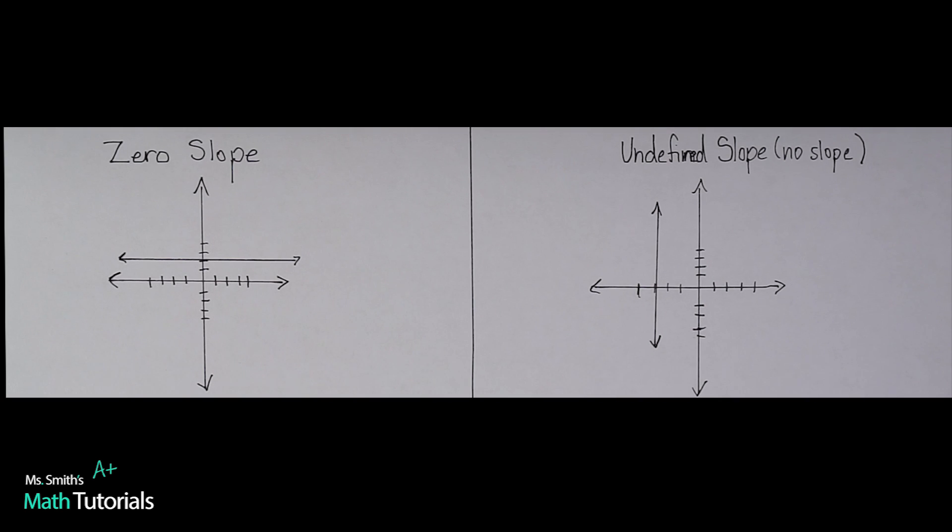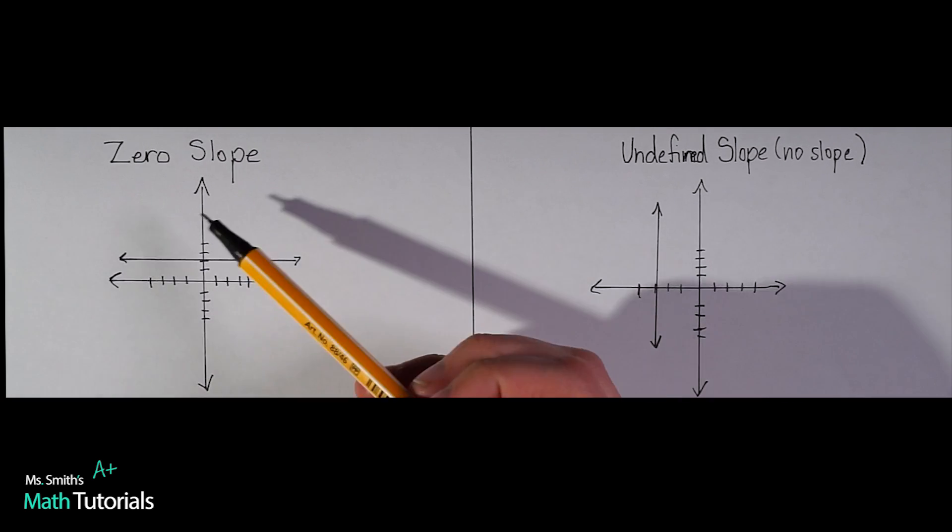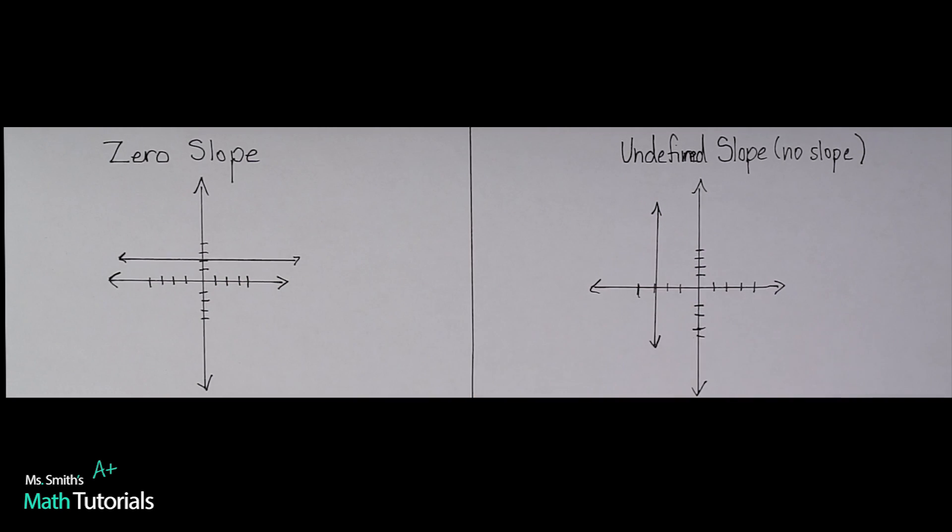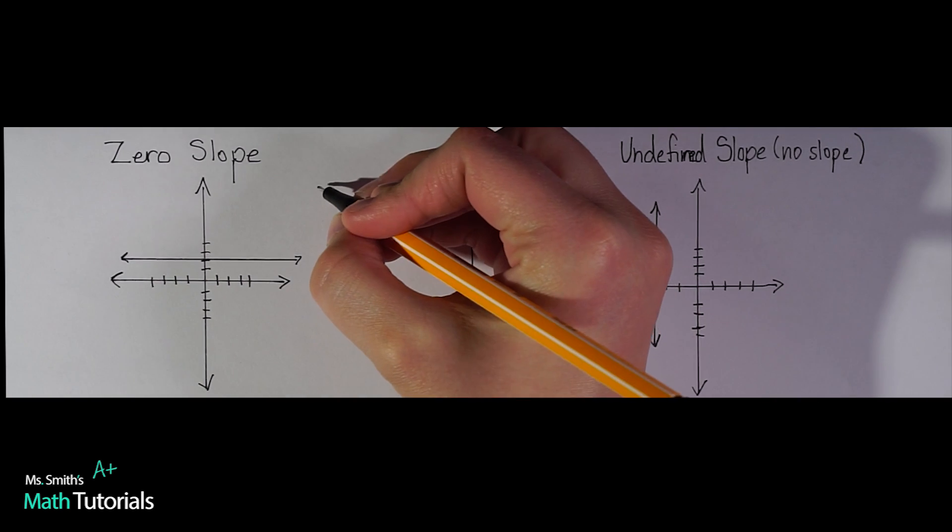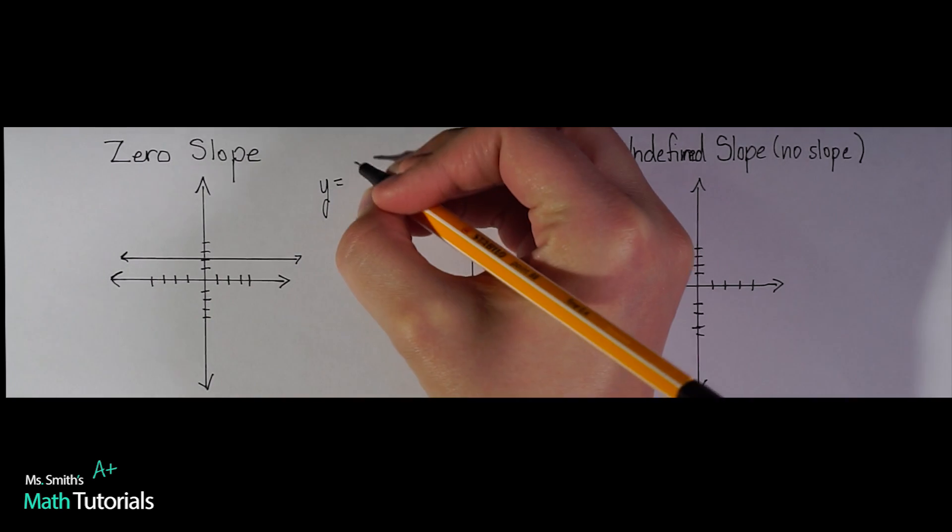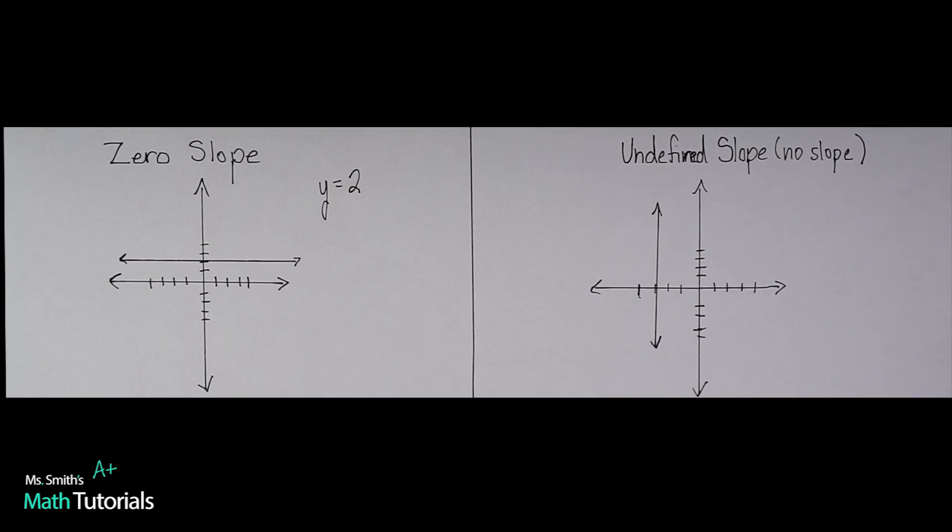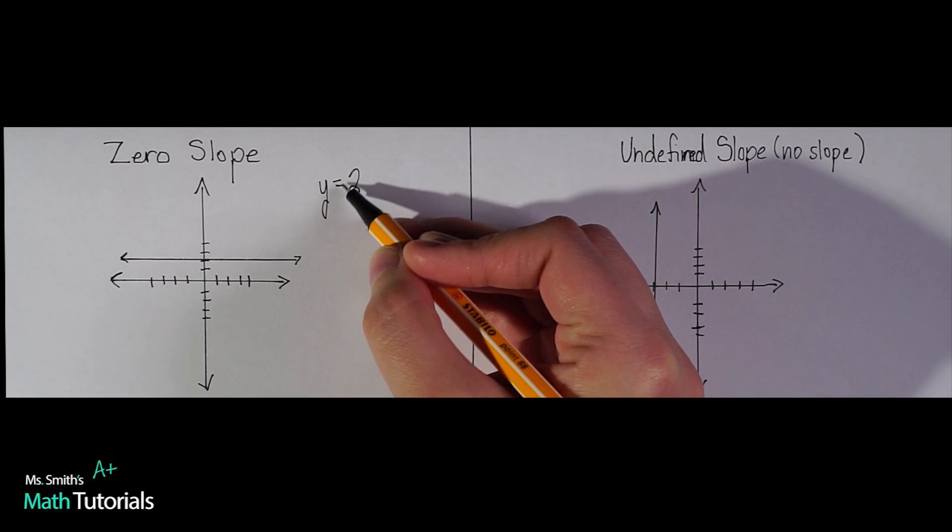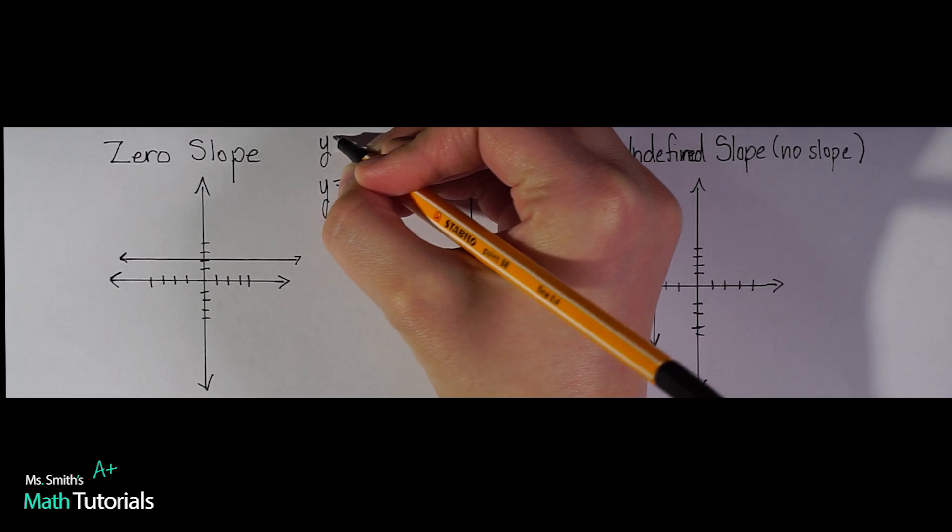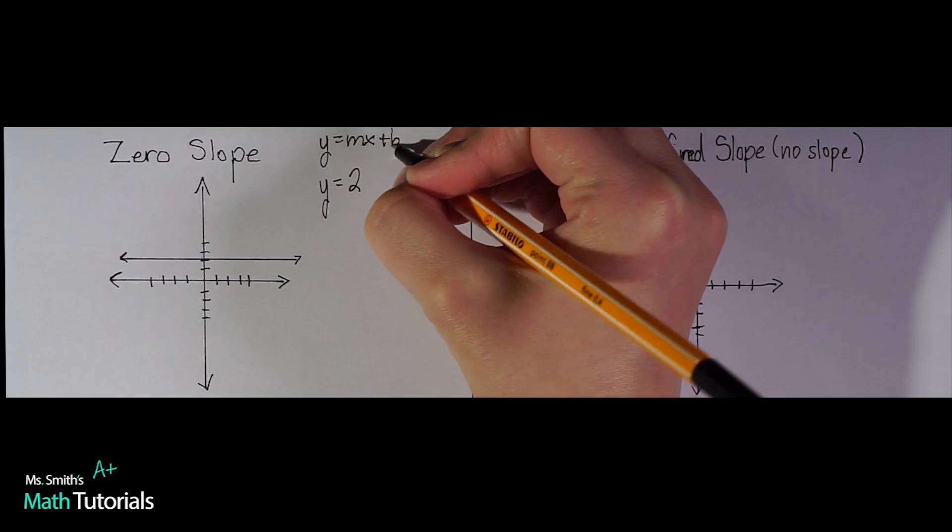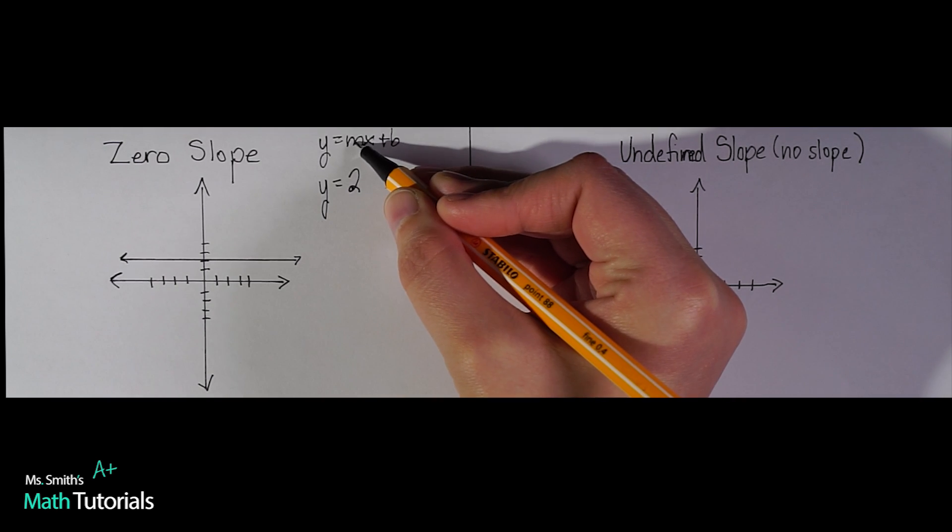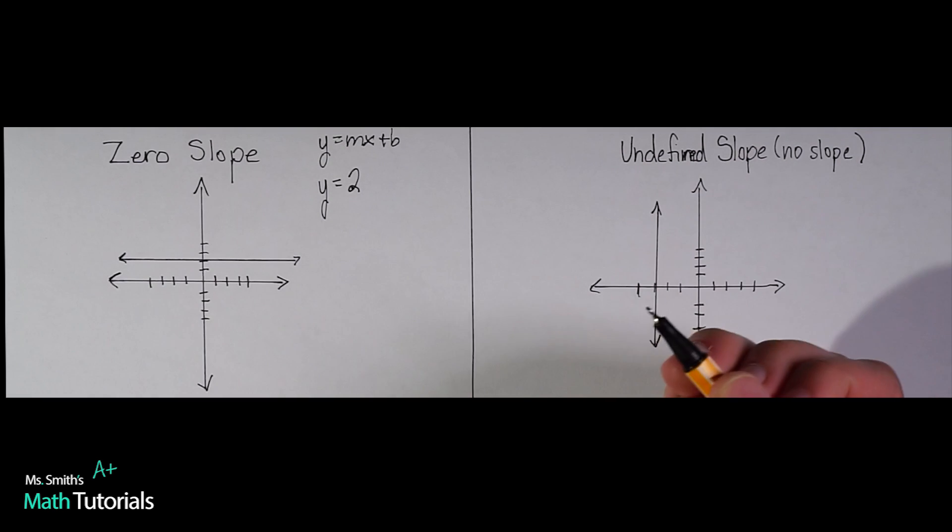The next two types of slope that you'll see, one would be a zero slope. So you'll notice this is like a horizontal line. This might look like y equals, and actually we can do this one, it's pretty easy to see y equals 2. Okay, so notice I have my b value in my slope intercept form, y equals mx plus b. I have the b value, but I don't have the m or the coefficient of x value at all. That tells me this is a slope of zero.